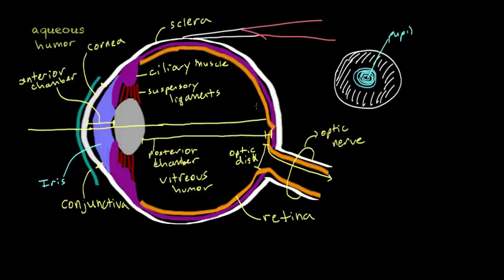There's a special part of the retina known as the macula, which is basically a part of the retina that's rich in cones — a type of photoreceptor. A specific part of the macula is this little dimple known as the fovea, and the fovea is super densely packed with cones. It's the part of the eye where, if you're reading or trying to get fine details from the environment, you want all the light to go, because it's able to sense really high amounts of detail.